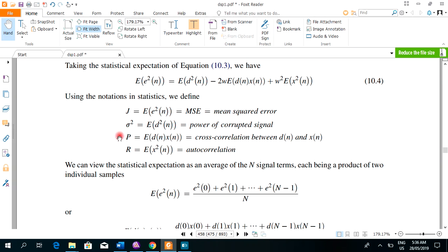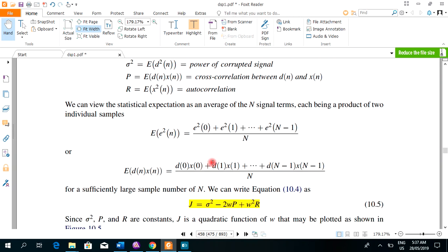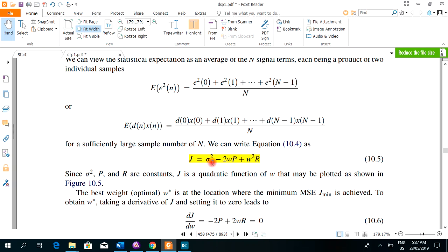If we use the following notation for the following terms: J, what is J here? J is mean squared error. Sigma square is the power of the corrupted signal. P is the cross-correlation between corrupted signal and X of N, which is noise input of the filter. And R is autocorrelation. If we expand the expectation, it comes out to be the mean sum of the components divided by total components or total number. If we simplify this equation or write in terms of the notation, it comes out to be J is equal to sigma square minus 2WP plus W square R.